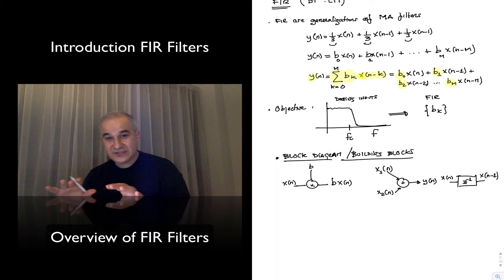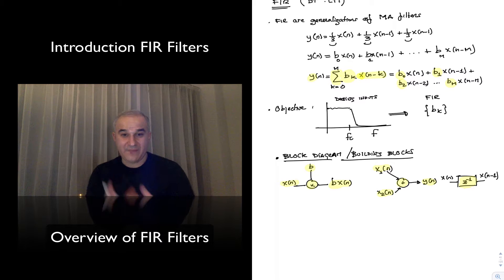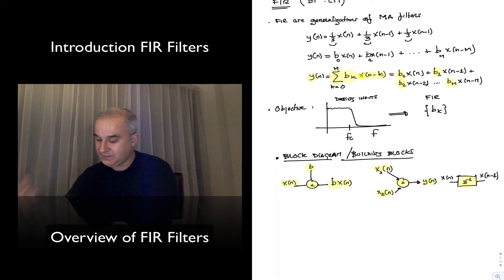So with these three building blocks, a scalar multiplication, meaning an input, we multiply time B, and we get an output that is B times x(n), and adder, and the delay operation, which you need to have a memory to store the previous value, and then in a cycle, for instance, we are going to be able to implement all finite impulse response filters, as well actually all infinite impulse response filters. So this is all you need.